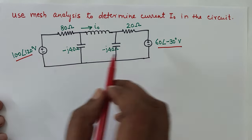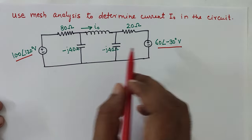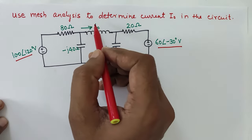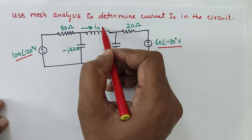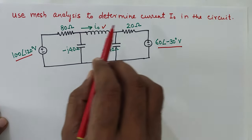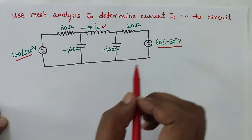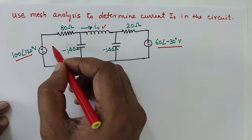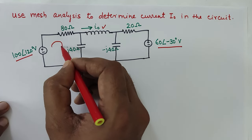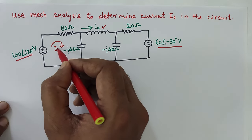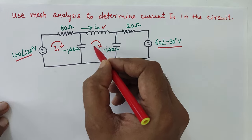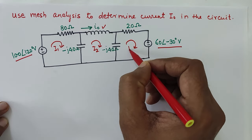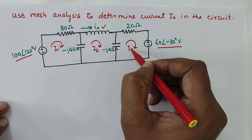In this case, we have two voltage sources connected at two different sides. We are going to find out the current I0 as per the given question. To find it, let us assume the mesh currents I1, I2, and I3 in all the three meshes.